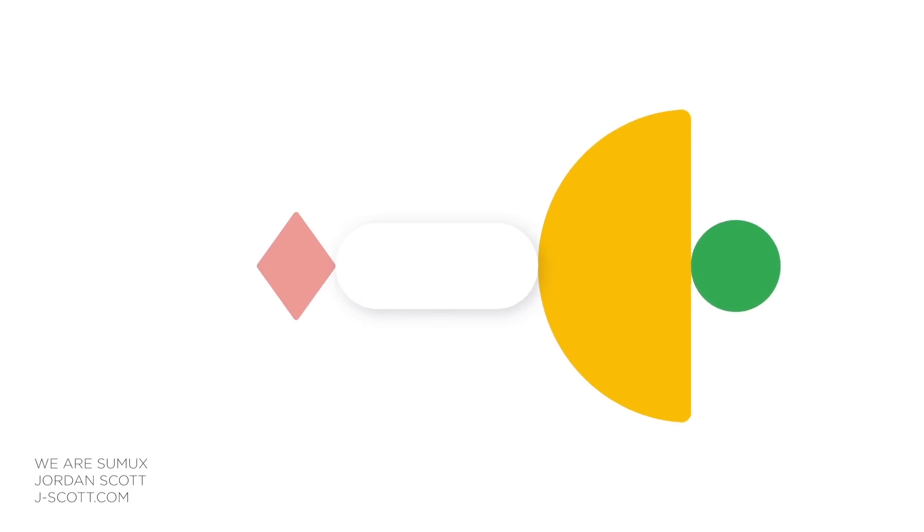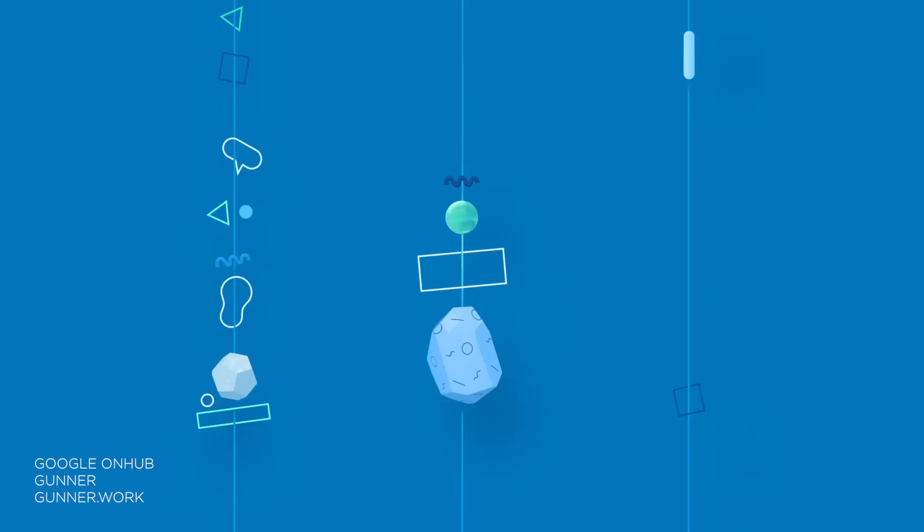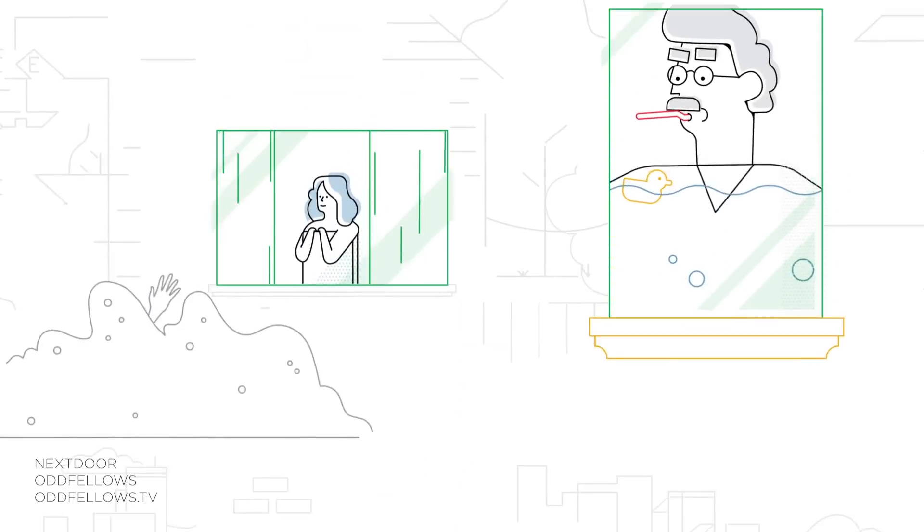And you might be wondering, how do those animators manage to achieve such great results? Where do they get ideas for movement? Why do things move in a specific way? And how do they manage the complexity of so many elements?